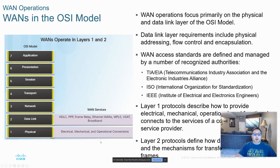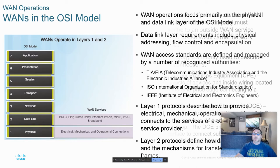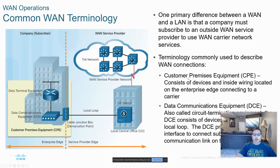WANs operate at layers one and two of the OSI model. Layer one is obviously the physical layer, and layer two is the data link layer. This is the area of the OSI model we're focusing on. There are several standards that apply — TIA, EIA, which we look at mainly with structured cabling, and IEEE, which has a multitude of standards that apply.